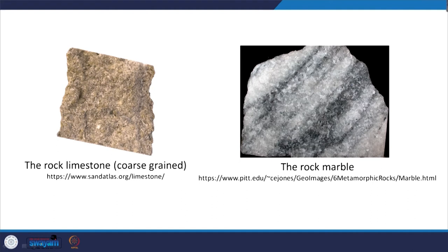First, the rock limestone. As shown in the picture, it is a coarse-grained limestone. Limestones are sedimentary rocks. In this case, minerals are scratched by knife and it has vigorous HCL reactivity. This is a coarse-grained variety of limestone containing almost no limey mud.